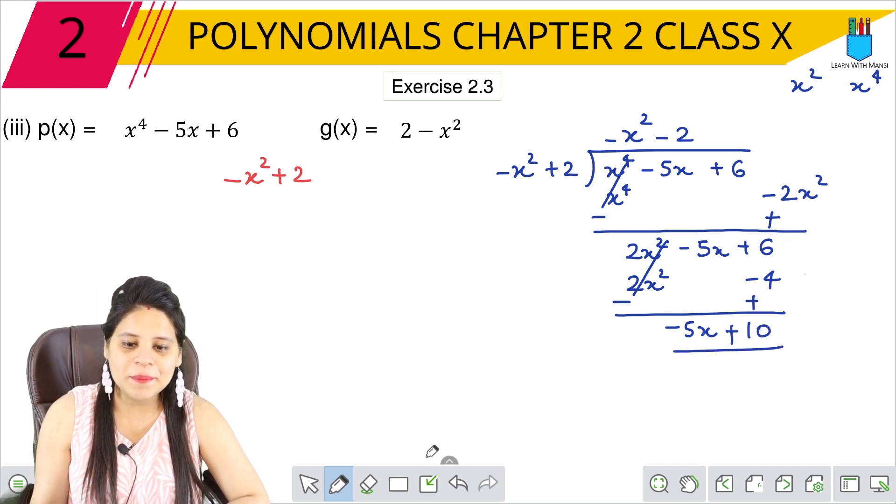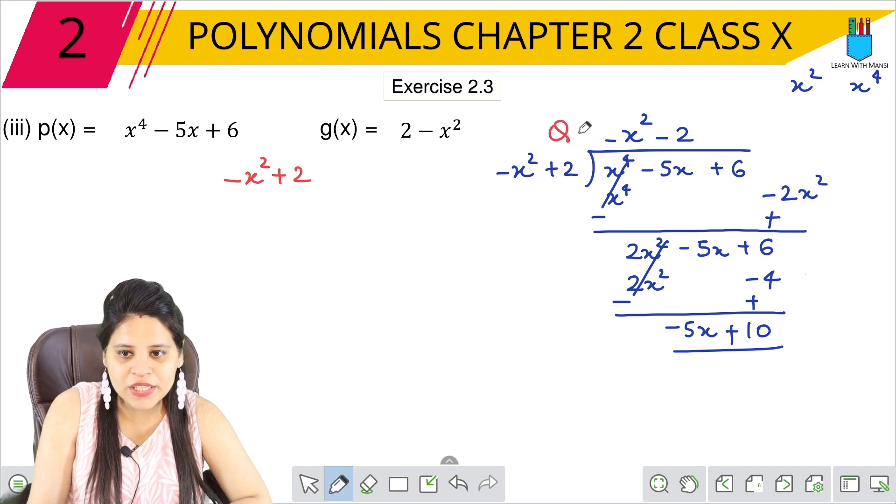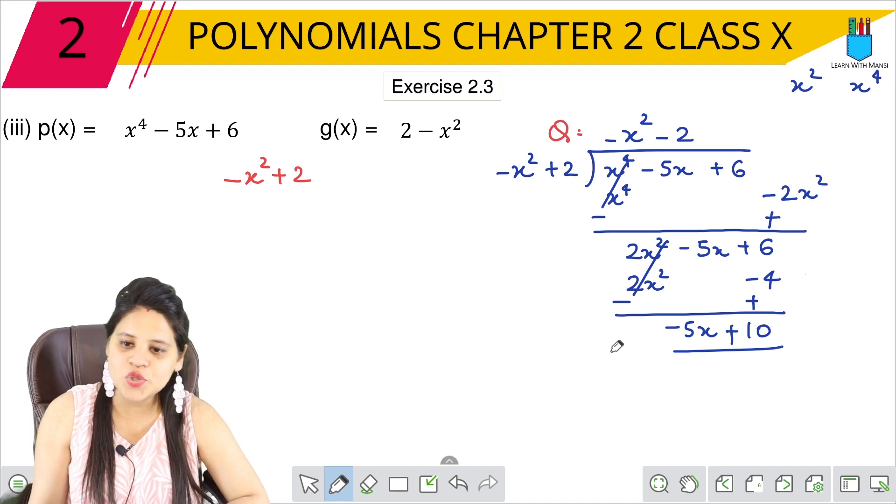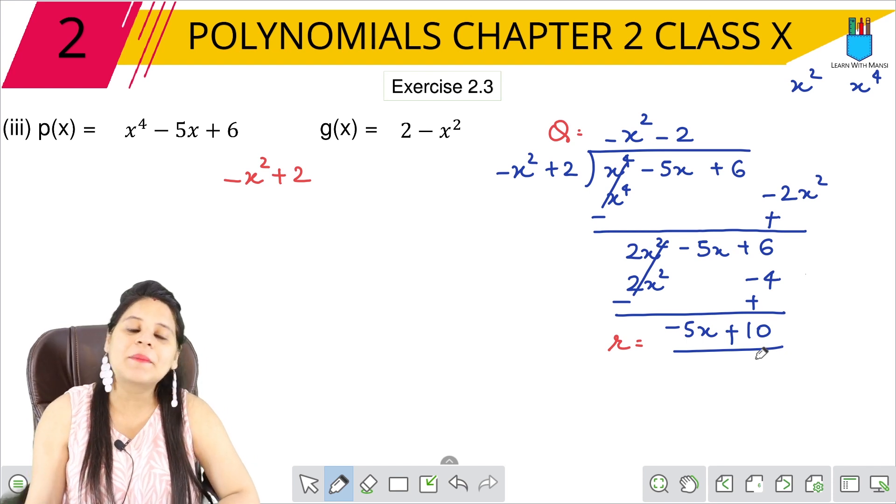So we have remainder. I will write it here. The quotient is first: the quotient is minus x square minus 2, and remainder is minus 5x plus 10. Okay? So this is our third part.